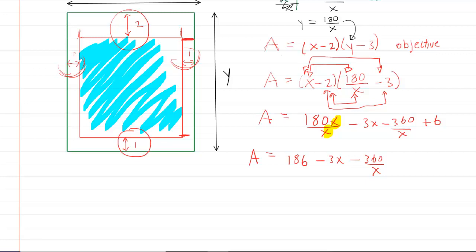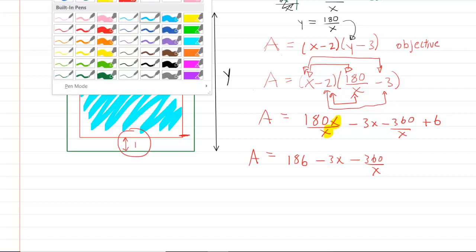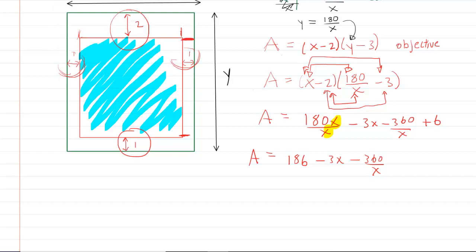So far, so good. Once you have your objective equation in terms of a single variable and you've simplified it as far as you can, you're going to want to compute its derivative. Perhaps before doing the derivative, we're going to want to take this X and move it to the numerator.